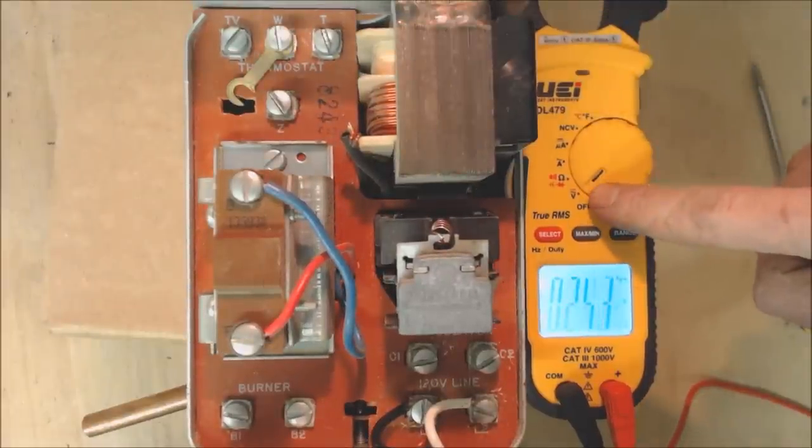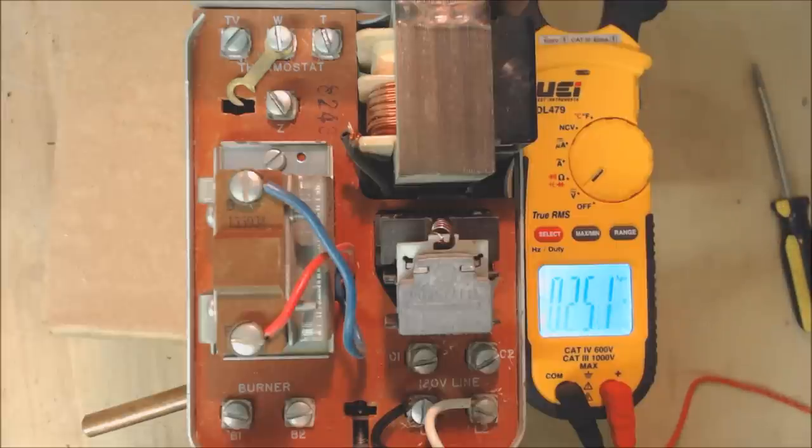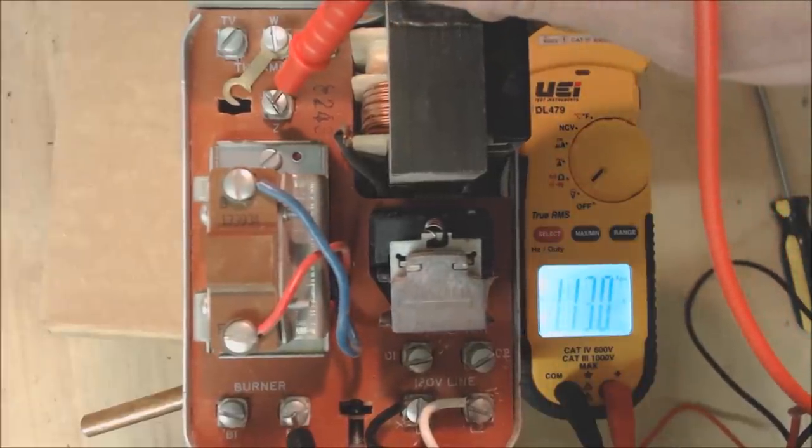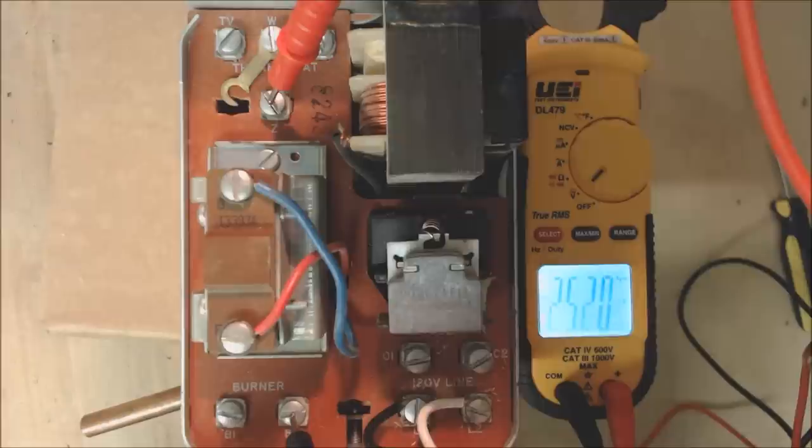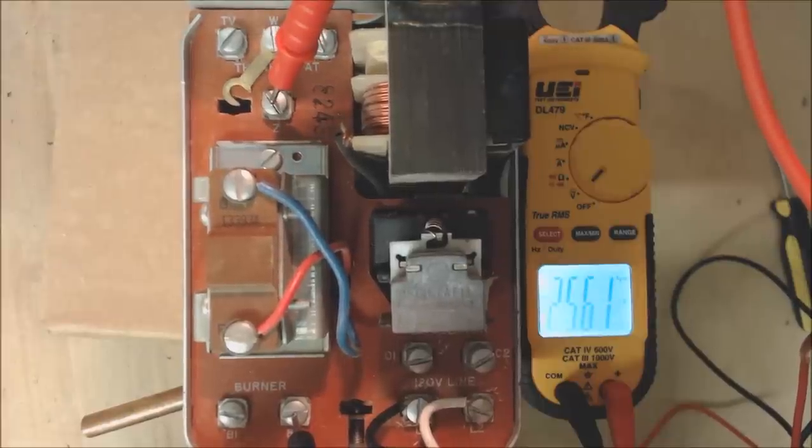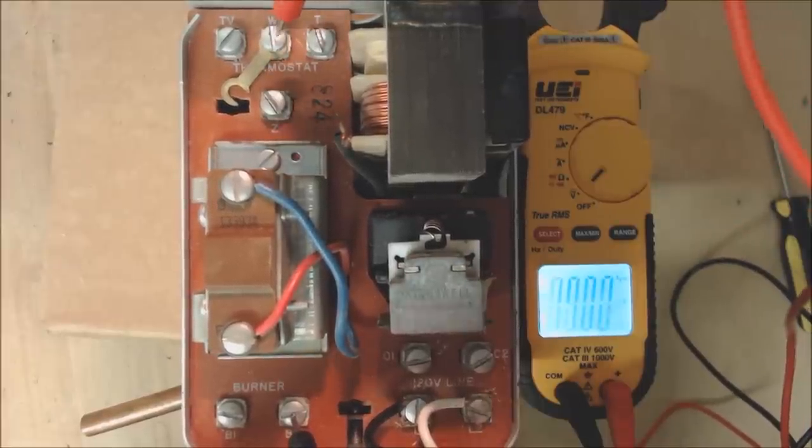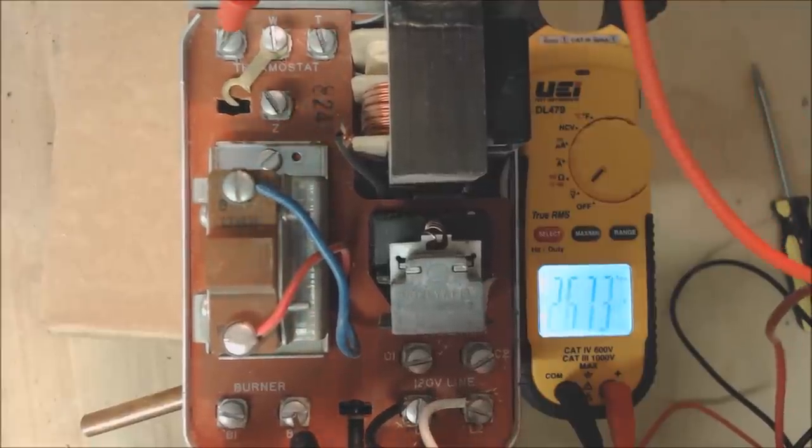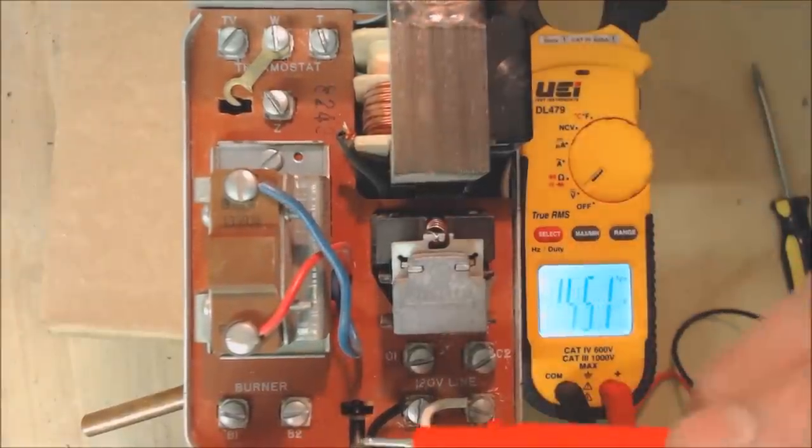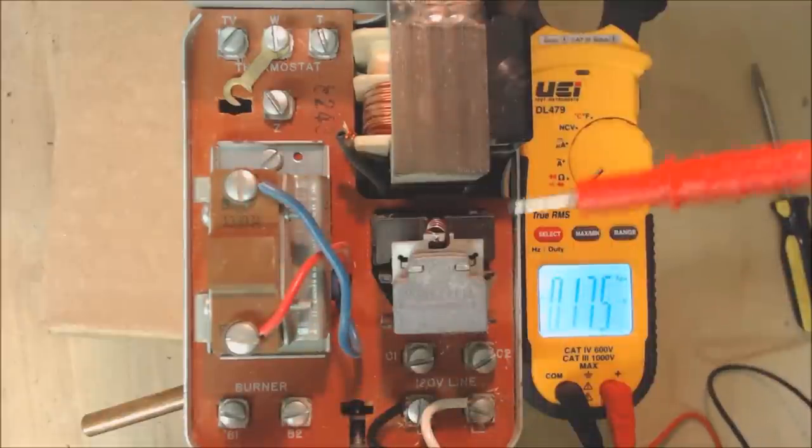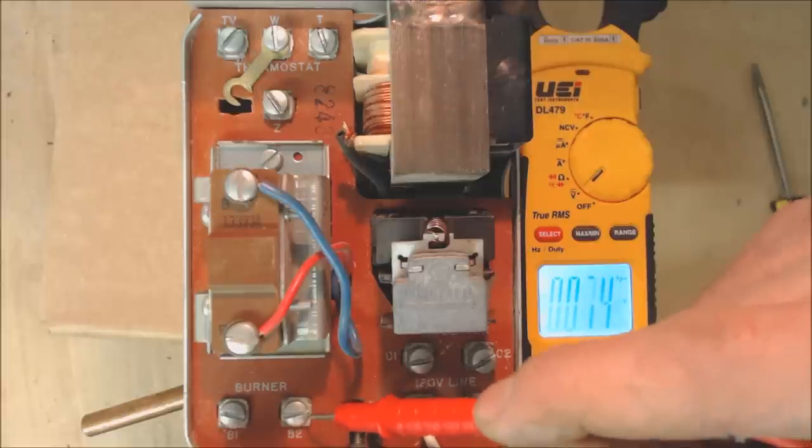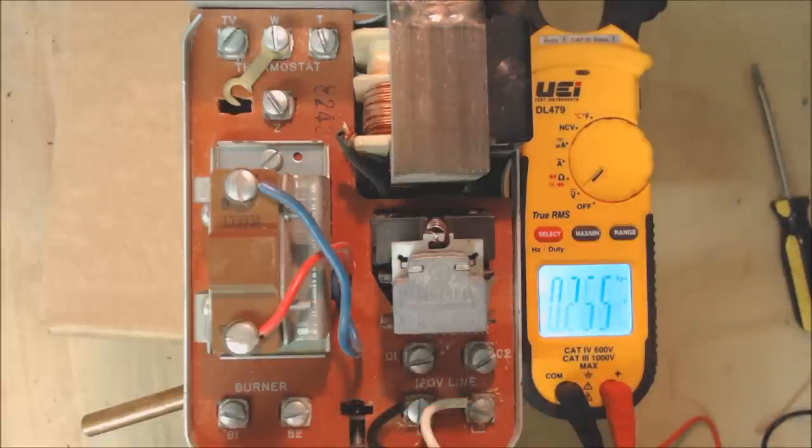I'm turned on to volts AC and now I'm going to test for 24 volts. You have 24 volts between your Z and B2, so we're reading 25.61. We don't have any voltage here or here. Anytime you're trying to test anything with 24 volts inside the Aquastat control, you're going to put your probe on B2, which is your common for your relay.